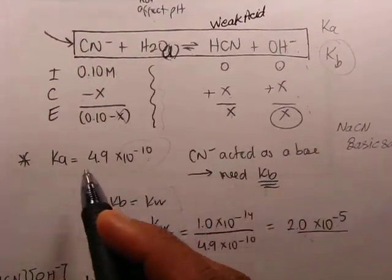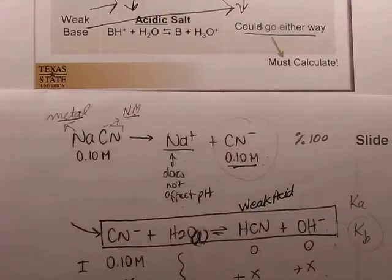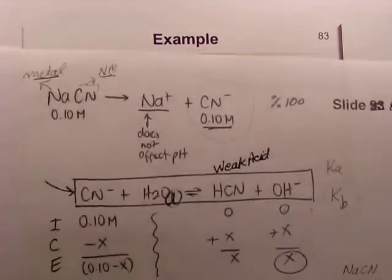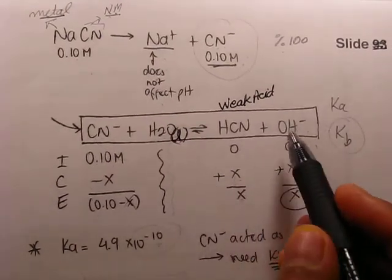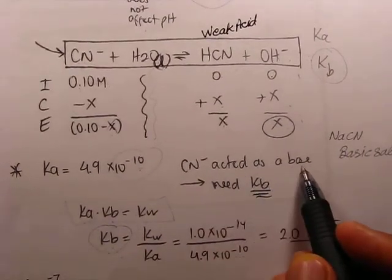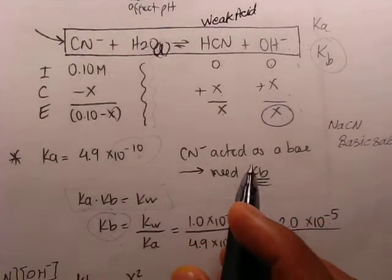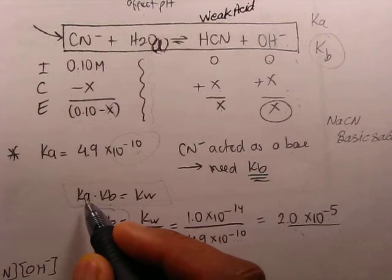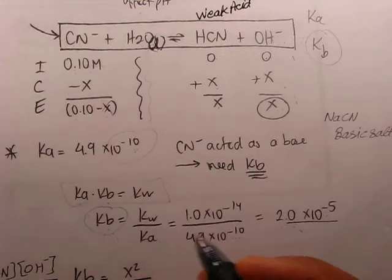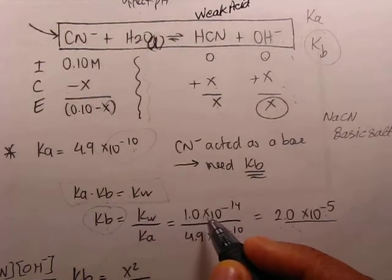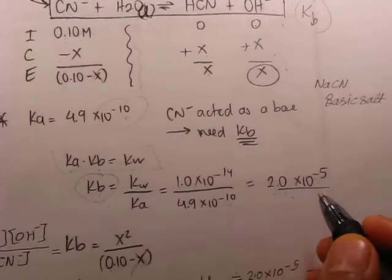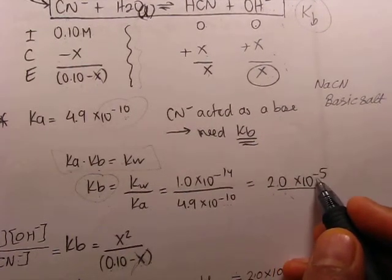In the question, the Ka value is given for HCN. But cyanide ion is acting as a base making a basic solution, so we need to calculate Kb rather than Ka. We use the formula: Ka multiplied by Kb equals Kw. Therefore Kb equals Kw divided by Ka, which is 1.0 times 10 to the minus 14 divided by 4.9 times 10 to the minus 10, giving Kb equal to 2.0 times 10 to the minus 5.